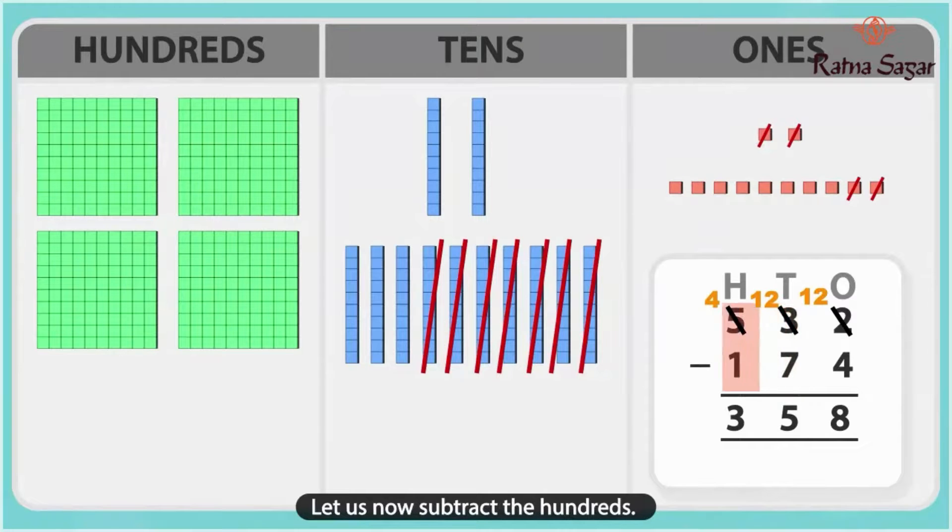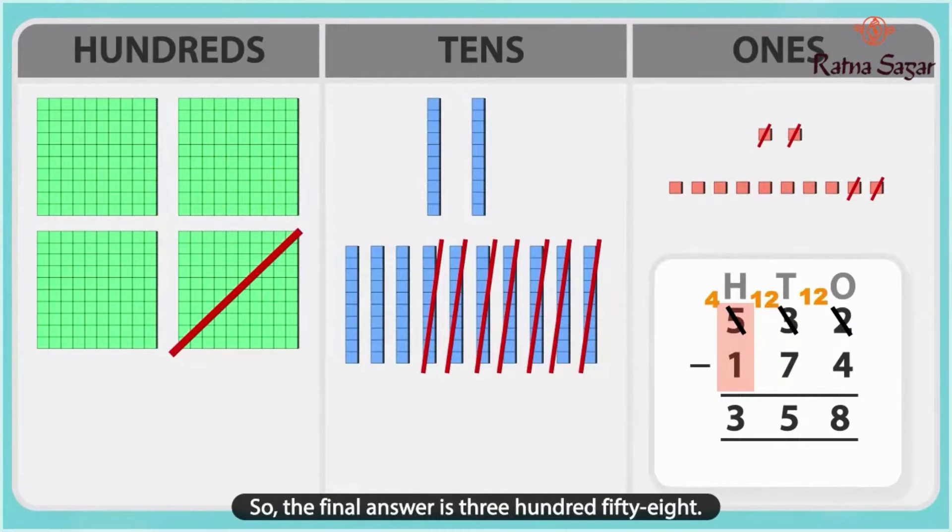Let us now subtract the hundreds. We get 3 hundreds. So, the final answer is 358.